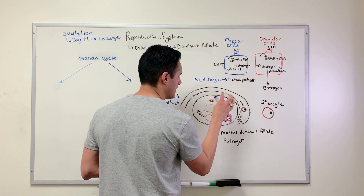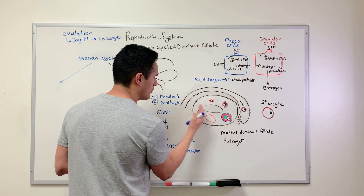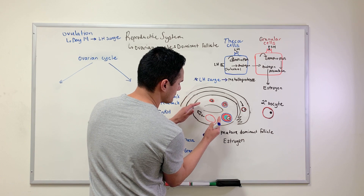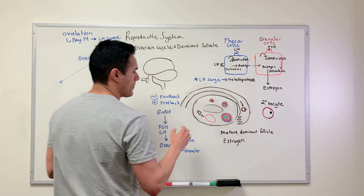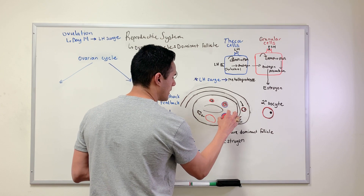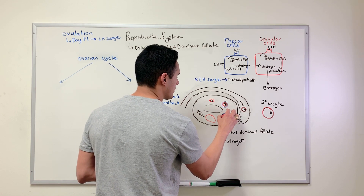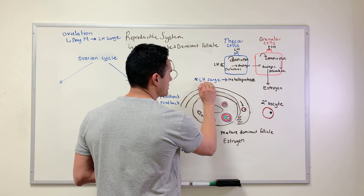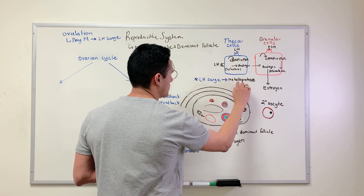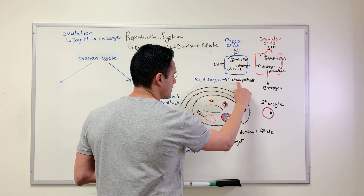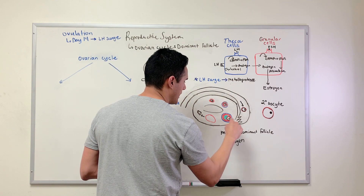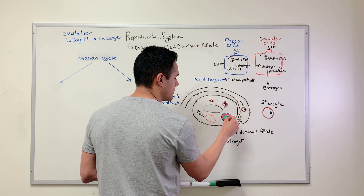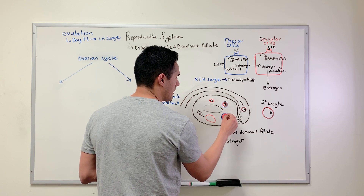All of this — the development from primary to mature follicle — is happening within the follicular phase. From here moving on is the luteal phase. At the point when we have our mature follicle, what results is the LH surge. The LH surge activates our metalloprotease enzymes that are going to degrade this mature follicle, and ovulation happens.